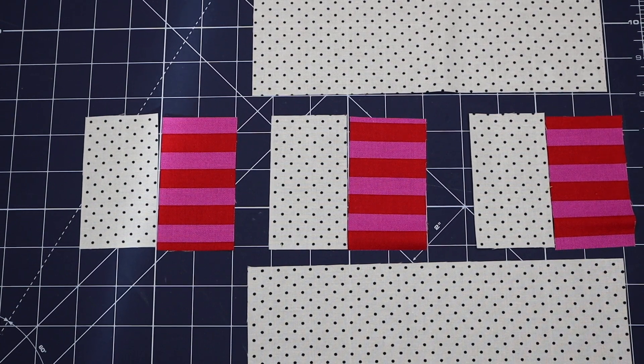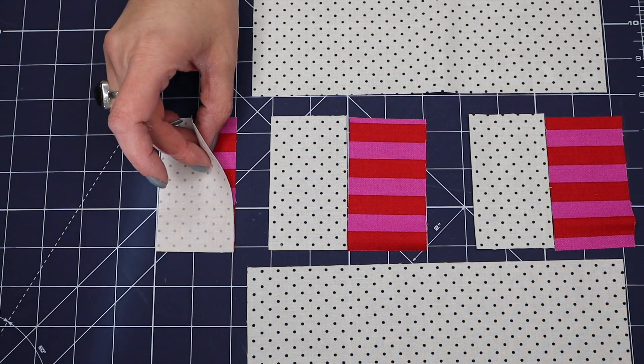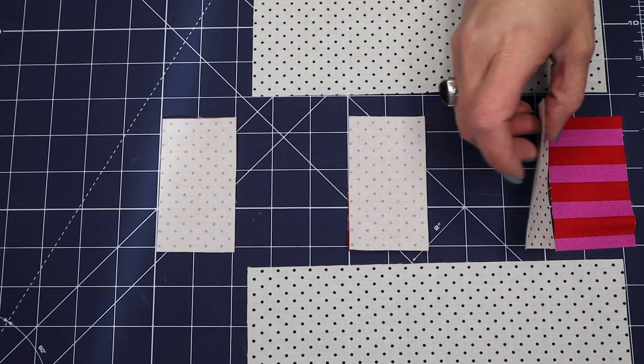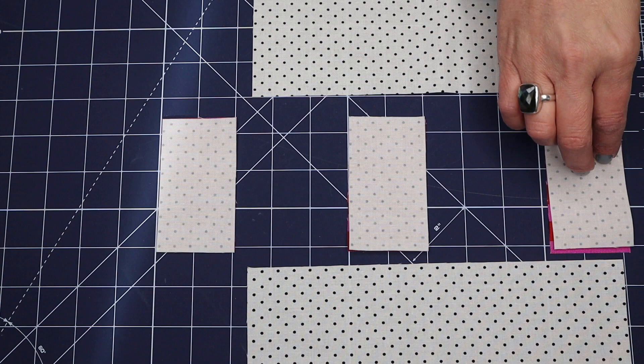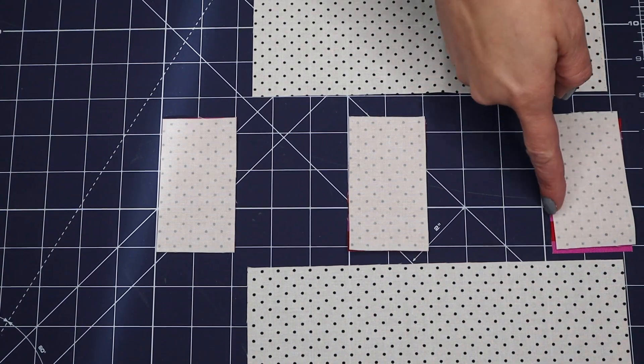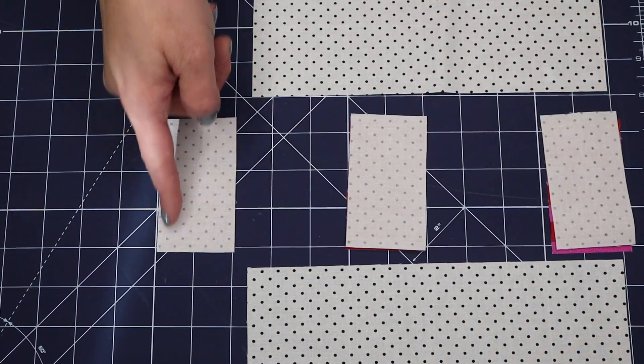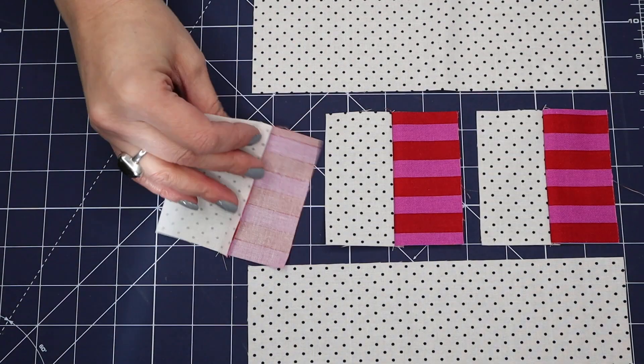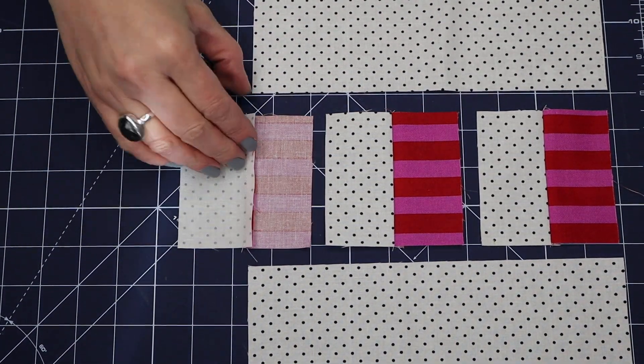So I'm going to go ahead and stitch these together and I just like to make a plan and chain piece as much as I can. So I'm going to stitch these right here with a quarter inch seam allowance. These are all pressed towards the dark fabric.